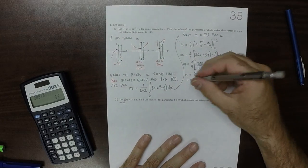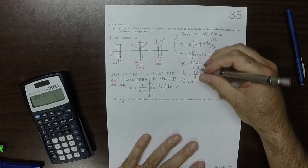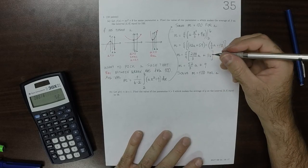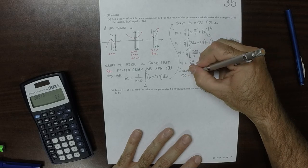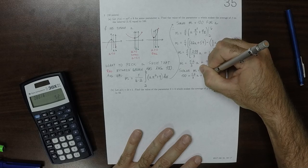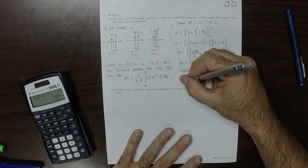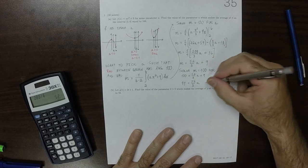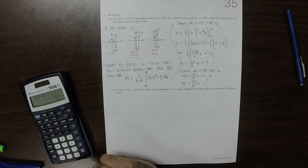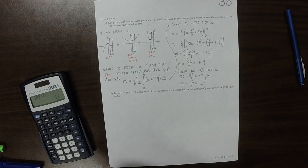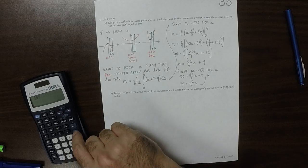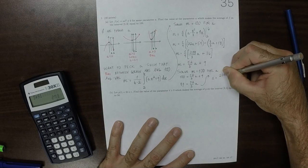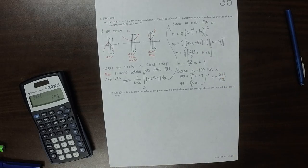We want to solve this for a, so solve m equal to 100 for a. That's 100 is 52 over 3a plus 9, so 91 is 52 over 3a. 3 times 91 is 273 over 52.